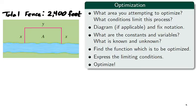There are six steps in completing an optimization problem. You begin by understanding the nature of the problem, asking yourself the question, what are you attempting to optimize, and what conditions limit this process? Now as you answer this question, fix notation to use in your calculations. It may also be helpful to diagram the situation as you fix notation.